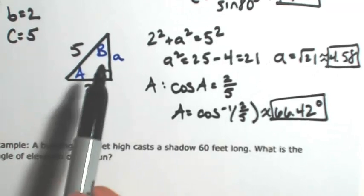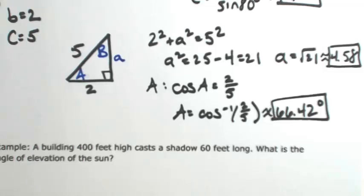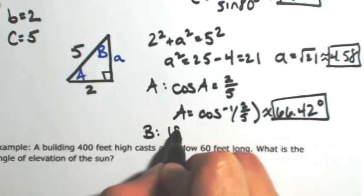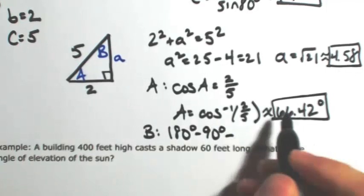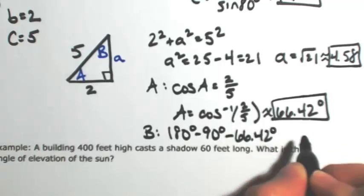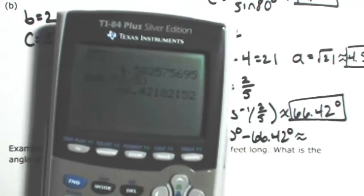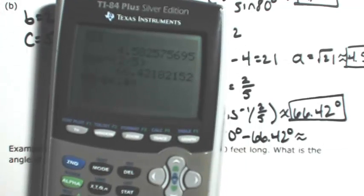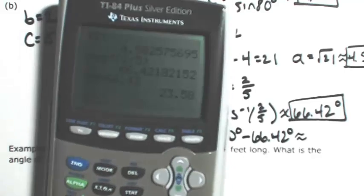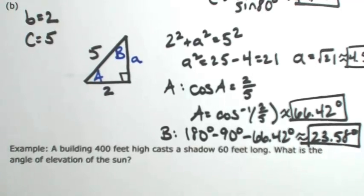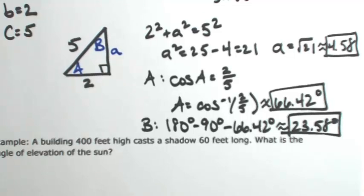We could find angle B the same way using opposite over hypotenuse with the sine function, or we can use the fact that all angles in a triangle sum to 180 degrees. So angle B equals 180 minus 90 minus 66.42, which is approximately 23.58 degrees. Since we used an approximation for angle A, this is also an approximation. Solving the right triangle just means finding everything that's missing — now we have all angles and all sides.